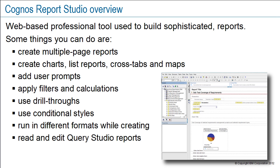Report Studio is a web-based professional report authoring tool used to build sophisticated reports. Some things you can do are: create multiple page reports, charts, list reports, crosstabs, and maps; add user prompts that act as questions to help users customize the information in a report; apply filters to retrieve a specific subset of records; apply calculations to create a new value from existing values; use drill-throughs to create a network of linked reports; use conditional styles to bring attention to patterns in the data; run the report in different formats while creating it; and read and edit Query Studio reports, though note that you cannot edit Report Studio reports in Query Studio.